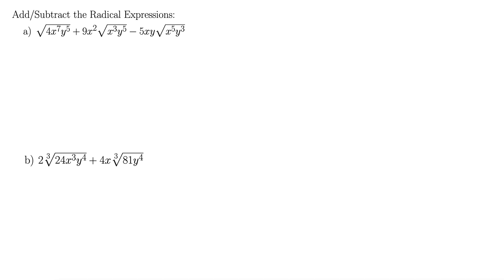This example asks us to add and subtract some rational expressions. We have square root of 4x to the 7th y to the 5th, plus 9x squared square root of x cubed y to the 5th, minus 5xy square root of x to the 5th y cubed. The idea is we want to get these combinations of variables and radicals to look the same on each term — we'll have different coefficients out front. Sometimes you can't get all the variables and radicals to match up, but you want to get as close to that as you can.